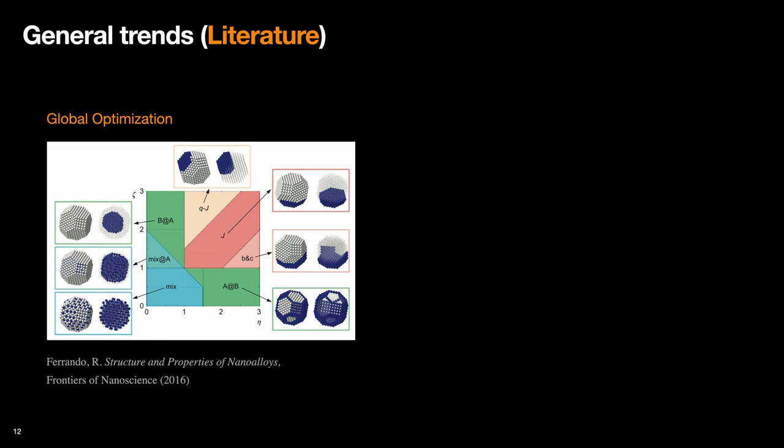There are some comprehensive works on this topic that inspired our work here. For example, global optimization techniques were used to find the core-shell preference. It showed that many different types of bimetallic structures are formed depending on the interaction energies.